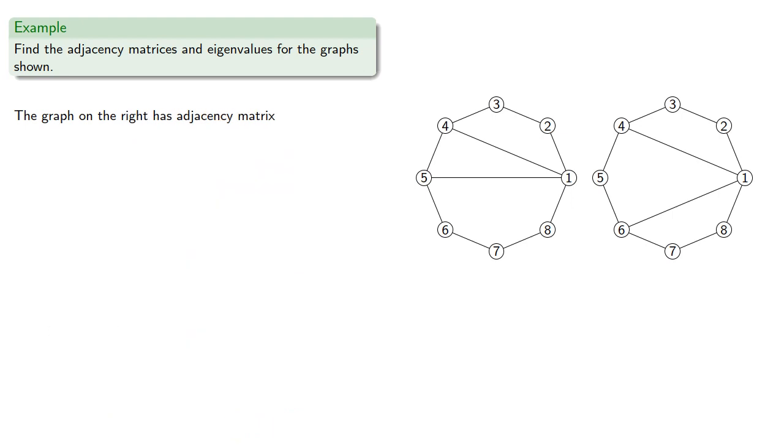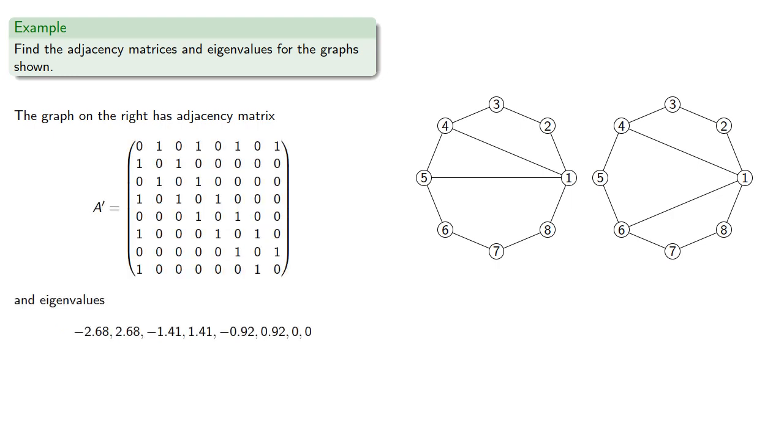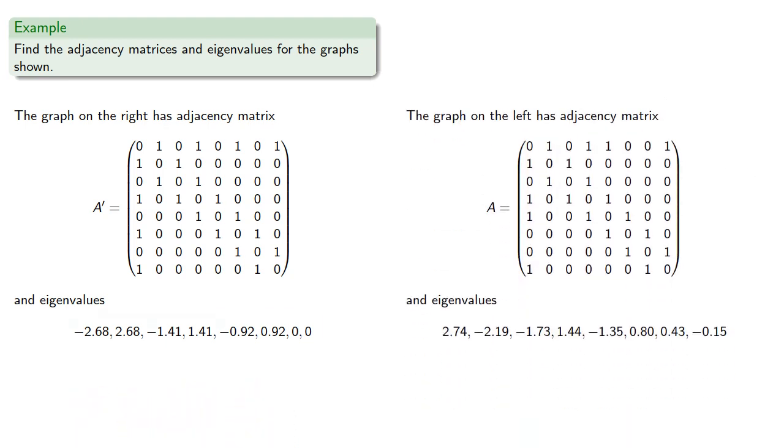The graph on the right has adjacency matrix... And the eigenvalues are... And since the eigenvalues are different, the graphs are not isomorphic.